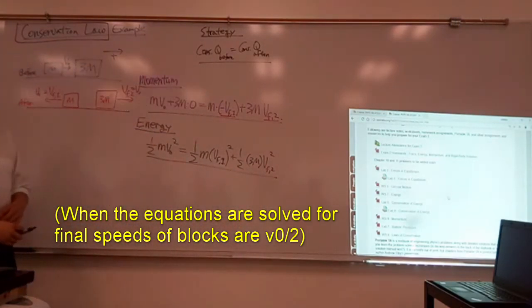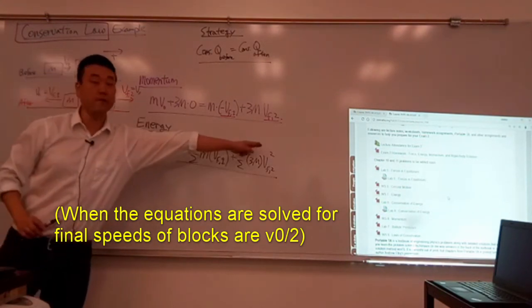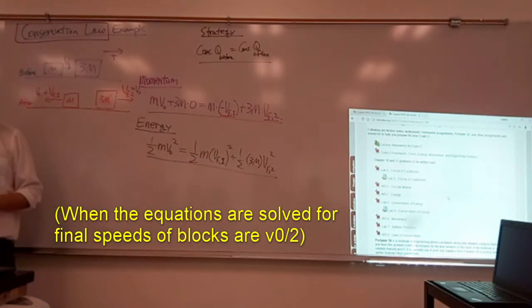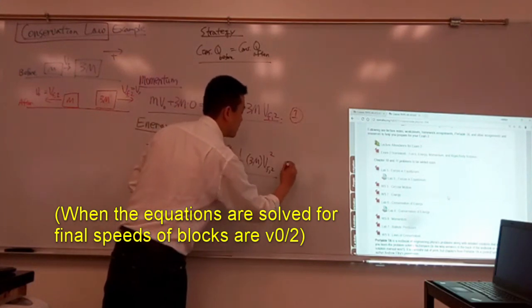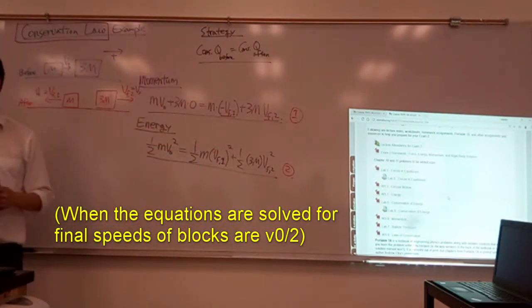And this can be non-trivial algebra, because of these squares being involved, but it's doable, it's not that complicated. And when you go through it, unless I made a mistake somewhere, you should find these to be the speeds. But, you know, even if not so, you have two unknowns, two equations, so at least you now know it's solvable. So all you need is a couple of minutes to go through the algebra that we don't have.